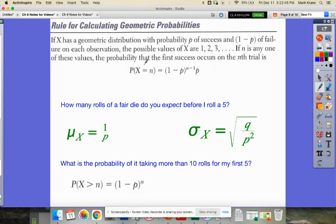So very self-explanatory formula if you understand that table that I drew out in the last place. How many rolls of a fair die do you expect before I roll a five? Hopefully you would say, hmm, well, there's a one out of six chance of rolling a five, so probably six rolls. And you would be exactly correct. The expected value, the expected number of rolls before your first success is one over P, which in this case is one over one-sixth, you multiply by the reciprocal, and you get six.